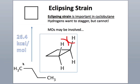So we can really get down and dirty and see how much energy is contributed by eclipsing strain. So cyclopentane, the 5-carbon cycloalkane, I'll just draw it down here in the lower left.